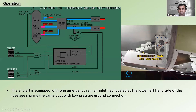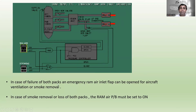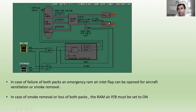In case of failure of both packs, the emergency ram air inlet flap can be opened for aircraft ventilation or smoke removal. In case of smoke removal or loss of both packs, the RAM AIR pushbutton must be set to ON.